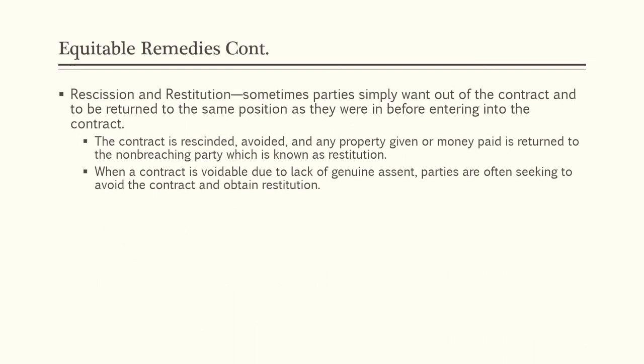Sometimes parties simply want out of the contract and to be returned to the same position as before entering into it. The contract is then rescinded or avoided, and any property given or money paid is returned to the non-breaching party — this is known as restitution. When a contract is voidable due to lack of genuine assent, parties often seek to rescind and obtain restitution. For example, when a minor who buys a car decides to avoid the contract upon reaching majority, they return the car and the seller returns their money.